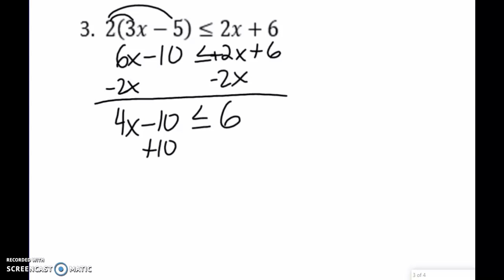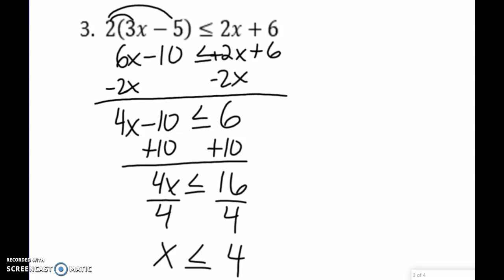We could then go ahead and add 10, undo subtraction, for 4x less than or equal to 16. Divide by 4, a positive 4, and x something 4. Well, fill in the blank here, would stay the same, and less than or equal to.